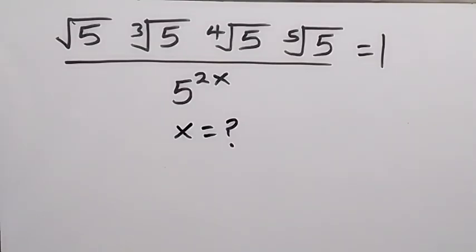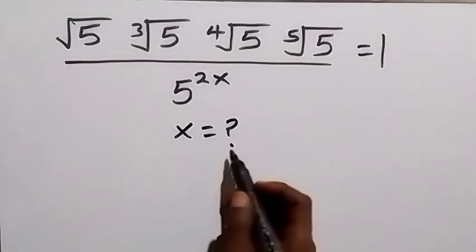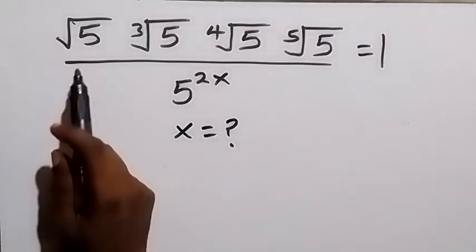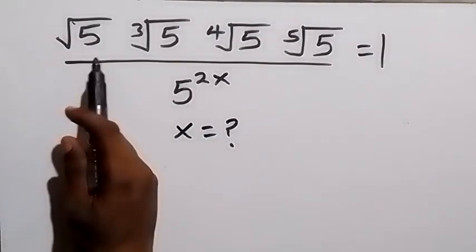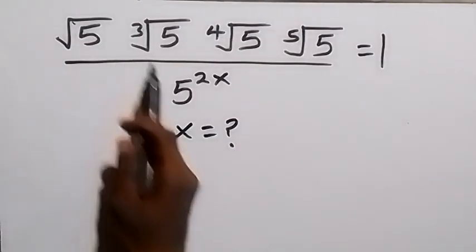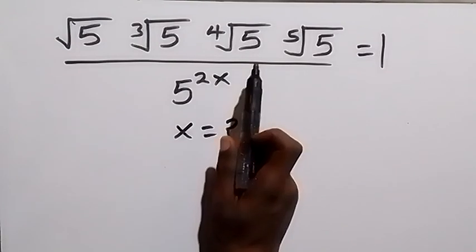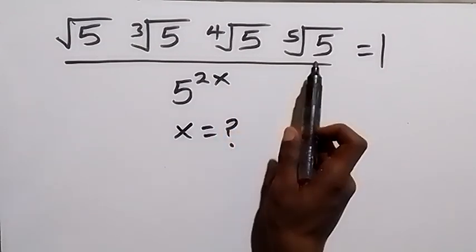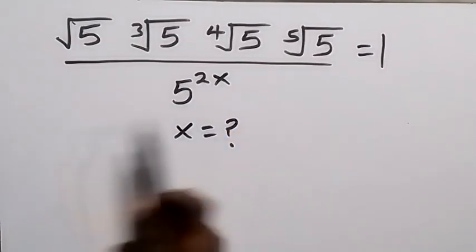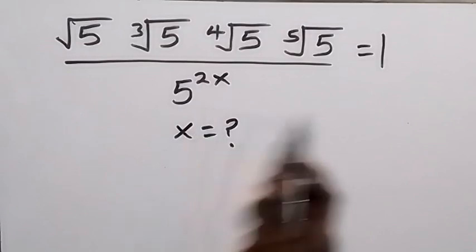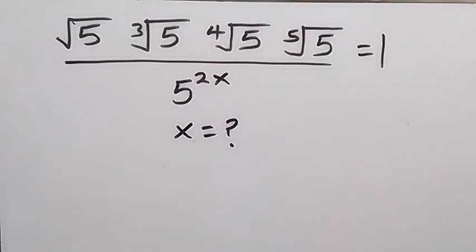Hello, you are welcome. From here we want to find the value of x, given that root 5 times cube root of 5 times 4th root of 5 times 5th root of 5, all over 5 raised to power 2x, equals 1.